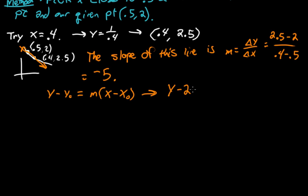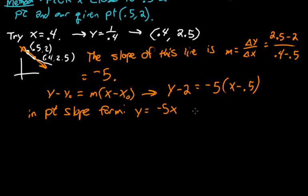So we have y minus 2 equals negative 5 times x minus 0.5, or in point slope form, y equals negative 5x plus 9.5. Let's move on.